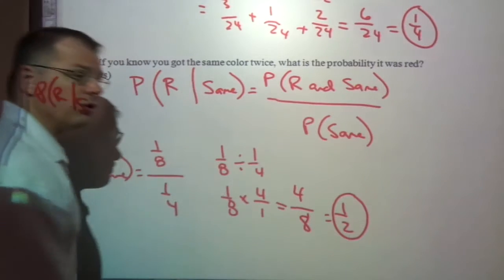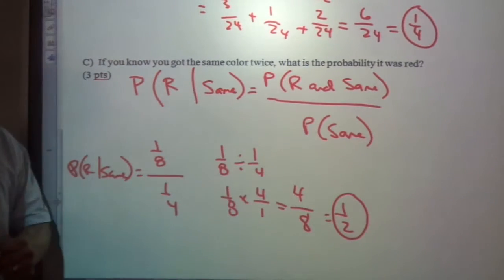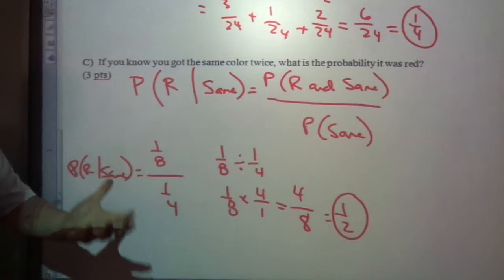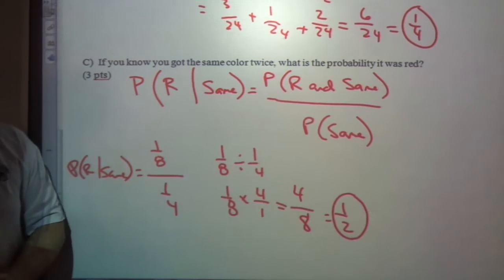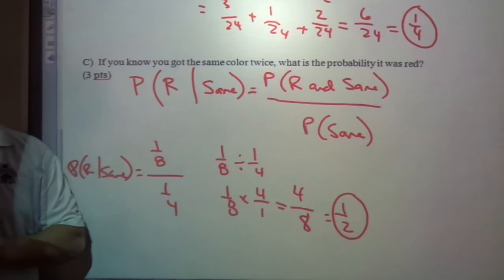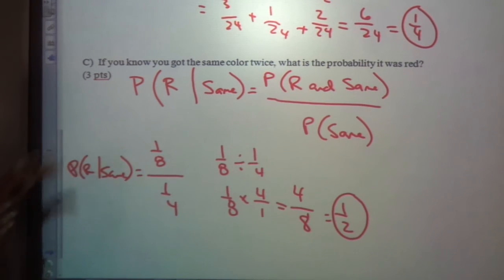So if I told you, hey, look, I spun the same thing, pretty good chance it's red, right? Fifty percent of the time it's going to be red, red. The other fifty percent of the time it's going to either be blue, blue, or green, green. That's what that conditional probability means.